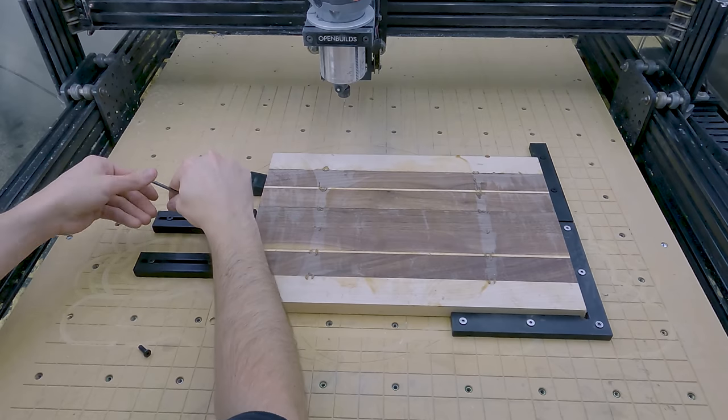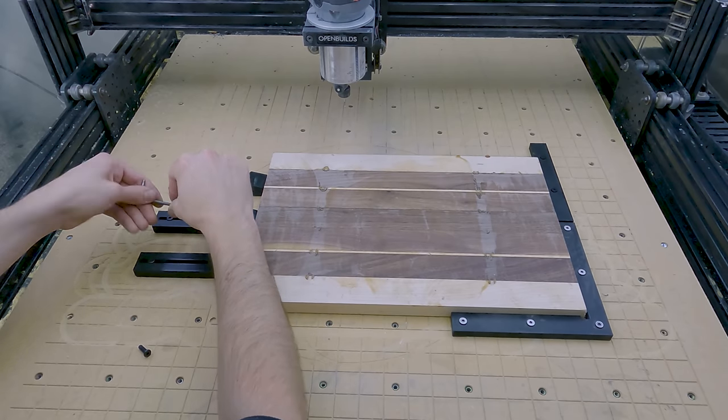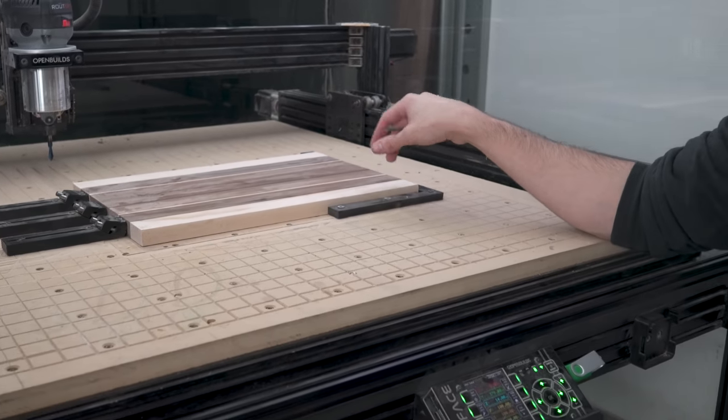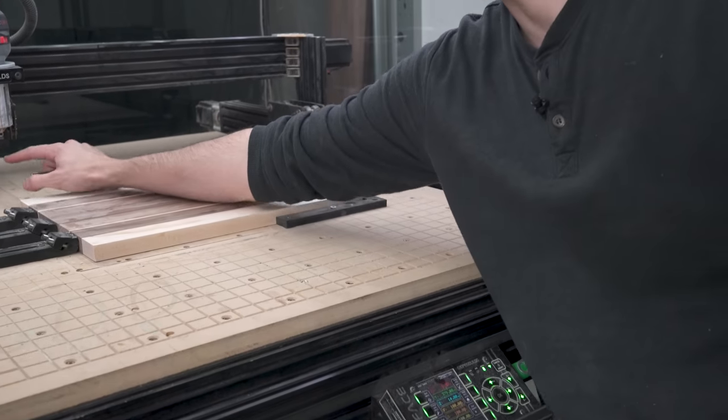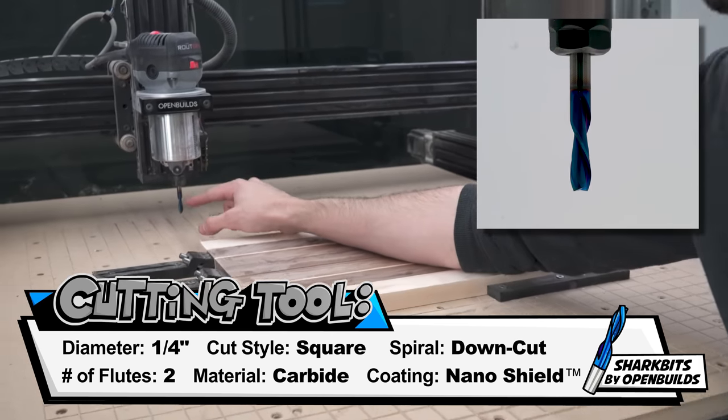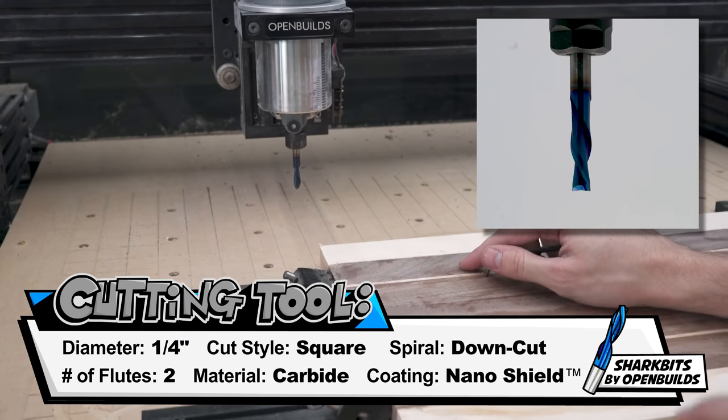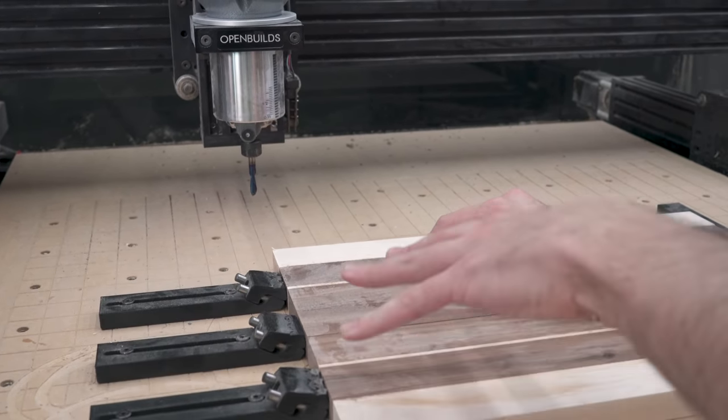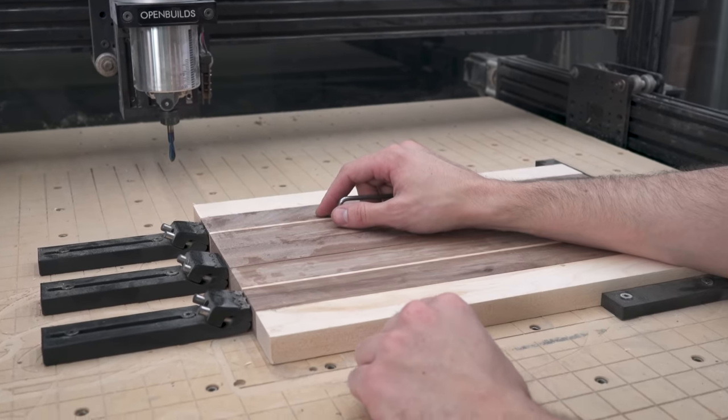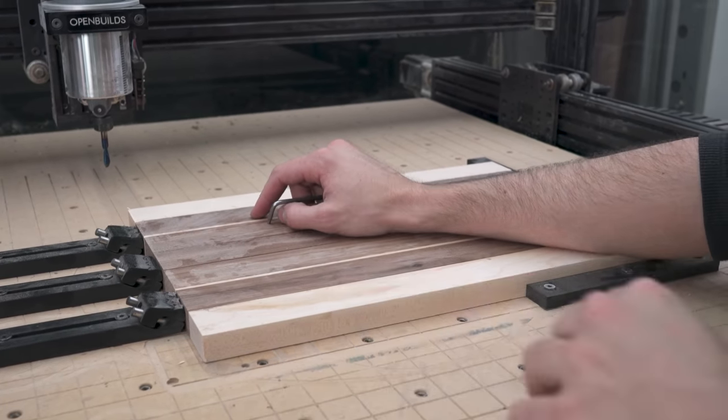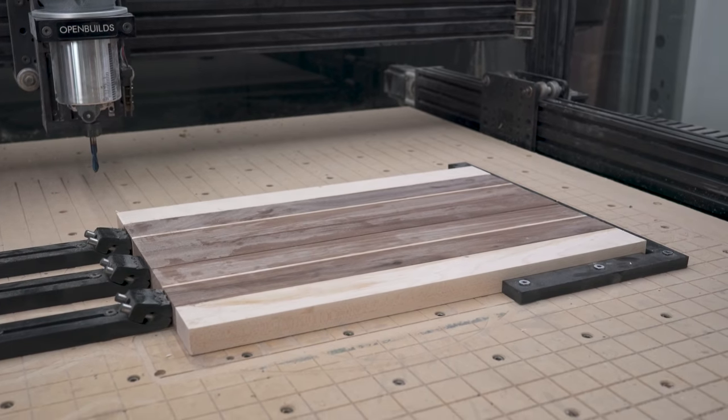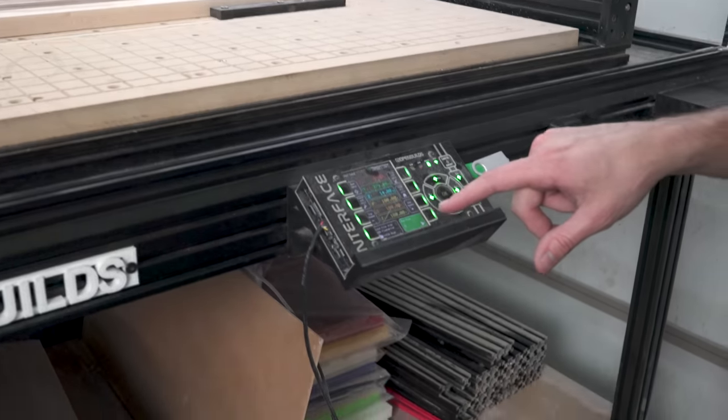Over time, due to vibrations and other factors, the board can lift up out of the work holding. For that reason, I like to use a down cut bit. As its name implies, it forces the chips downwards which is not great for surface finish but it does keep the board in place. Plus, I'm going to sand this after we're done so I'm not really worried about surface finish at this point. We can click start.